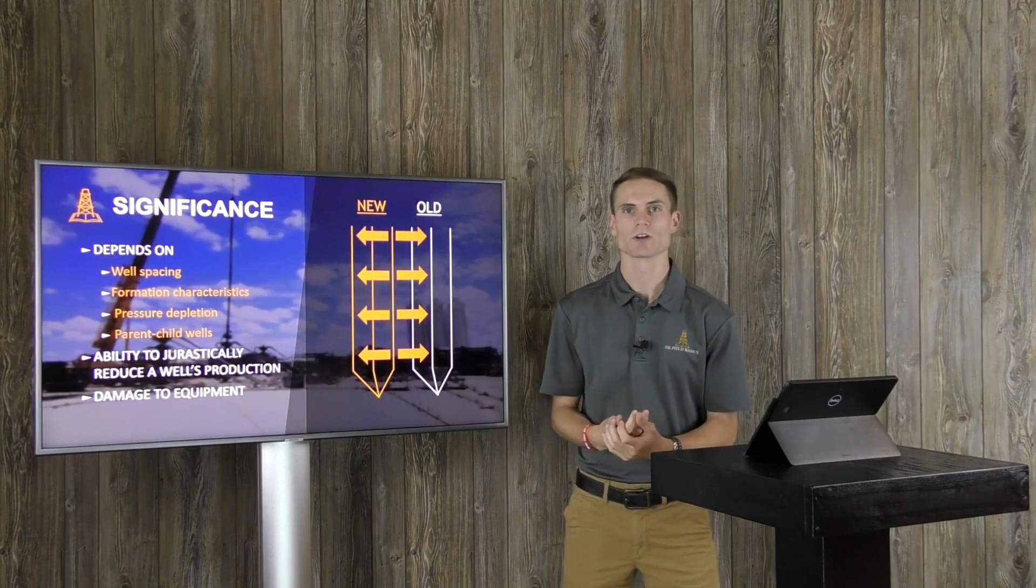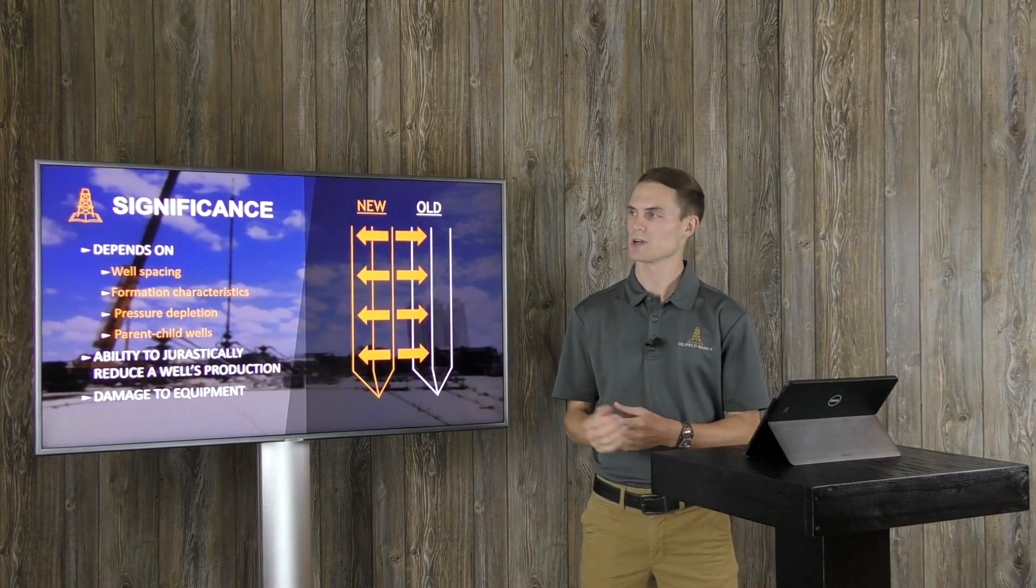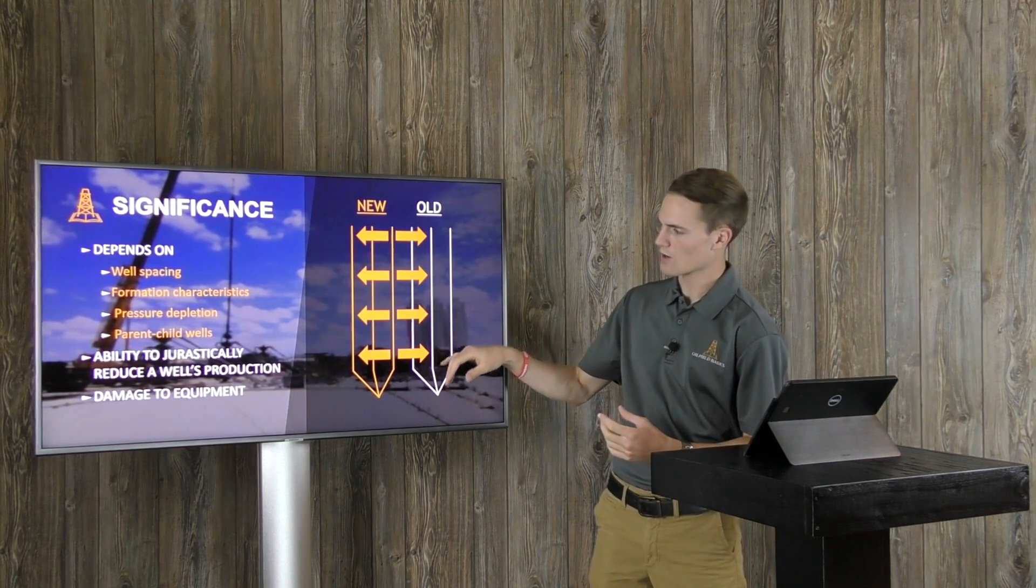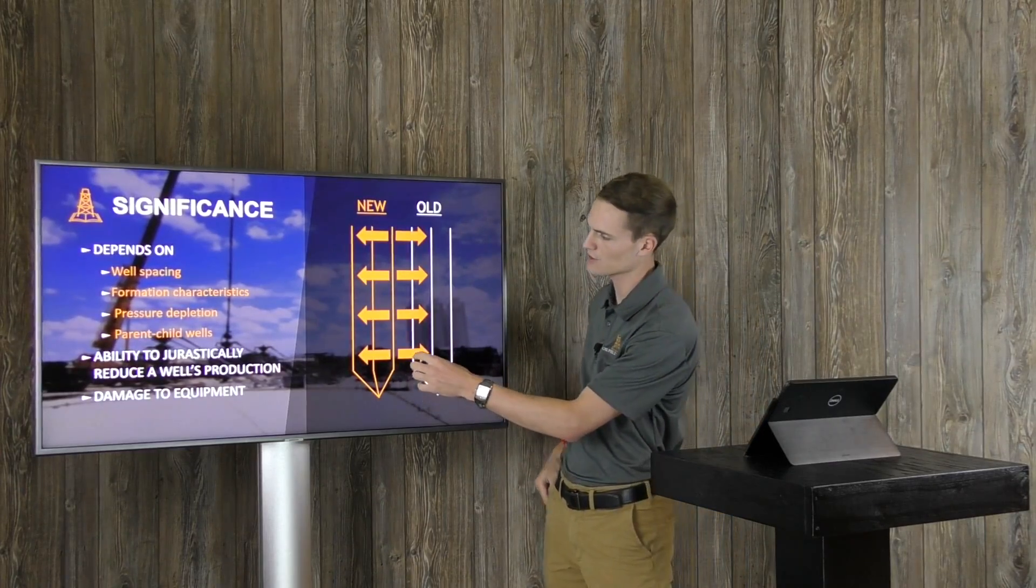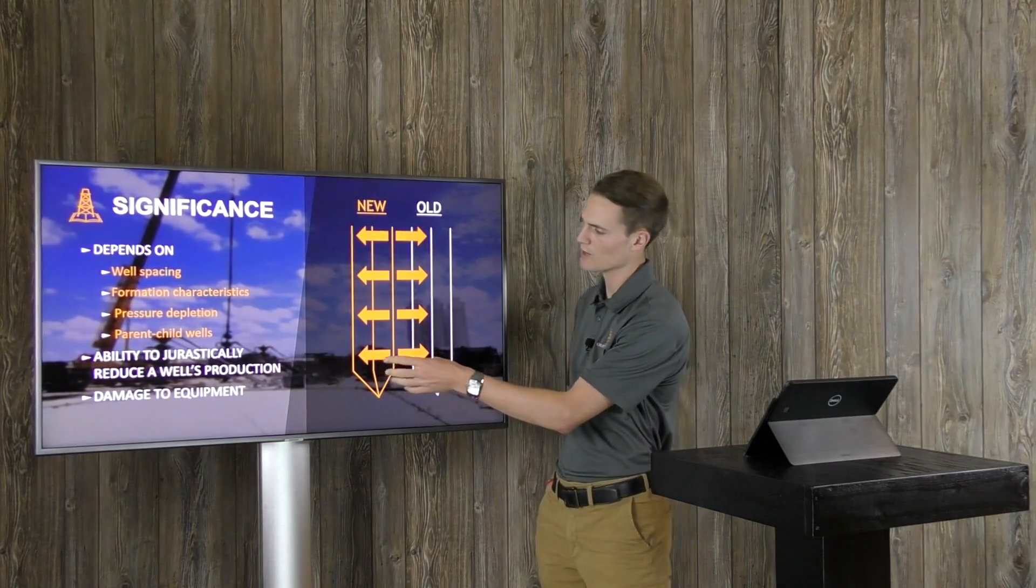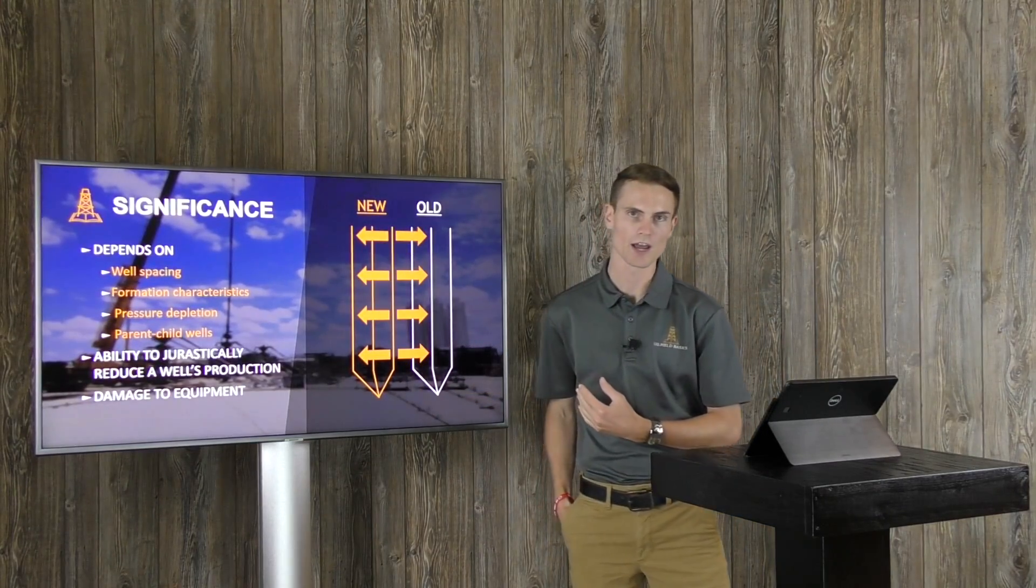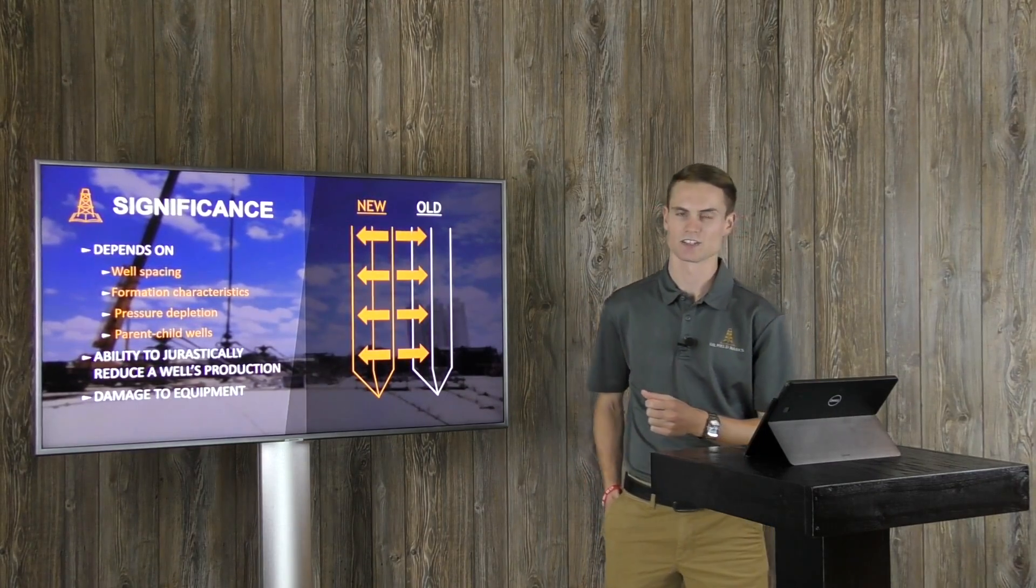So as I alluded to before, the significance of a frac hit and the severity can range depending on the scenario. We have a lot of factors that can affect how significantly a well gets hit by a frac. A lot of it is going to depend on the things that we have here on the screen. The first one being well spacing. So how close are the existing wells to the new well that is being fracked? That is a major player. So if you're 500 feet away or less from the new well, you're going to get hit probably a lot harder than you would if you're 1,000 or 2,000 feet away from that new well. So well spacing drastically matters in this case.